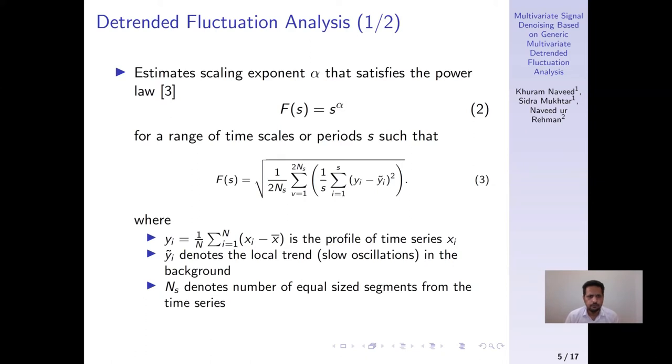I will now talk about detrended fluctuation analysis because of its relevance with our work. DFA is used to estimate scaling exponent alpha such that it satisfies the power law given in equation 2 for a wide range of scales, that is time periods, which is denoted by s.